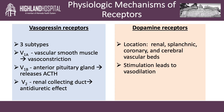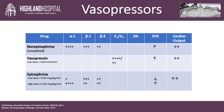Dopamine receptors are also widespread, namely throughout the renal, splanchnic, coronary, and cerebral vascular beds. Stimulation of these receptors will cause vasodilation. Now, let's get back to our table. Here are the general profiles of the listed vasopressors.